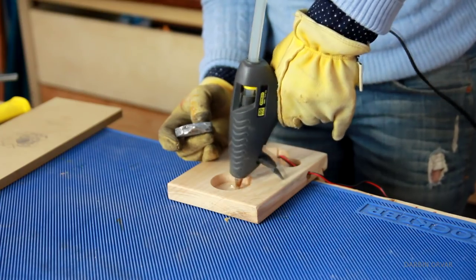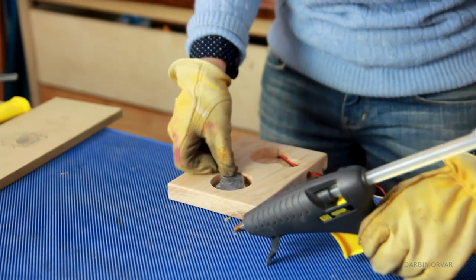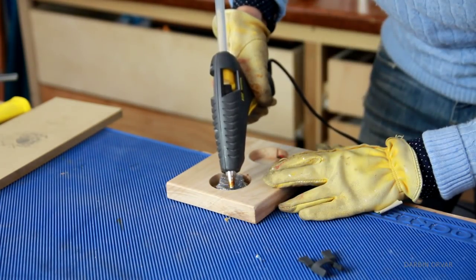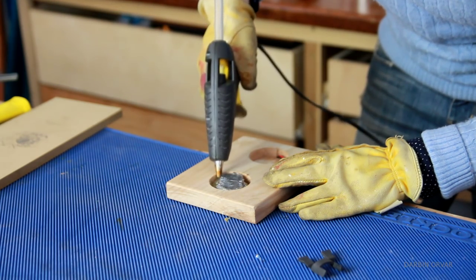So I used this because I already had some lead on hand. However, you could definitely use BBs, or any other type of weight, just to make sure the lamp is a little more stable.